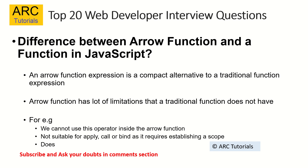They can also ask: what is the difference between an arrow function and a regular function? An arrow function is a compact alternative to a traditional function expression but has some limitations. For example, we cannot use the this operator inside an arrow function because it does not have its own scoping. That is why we also cannot apply methods like call, apply, or bind on arrow functions.